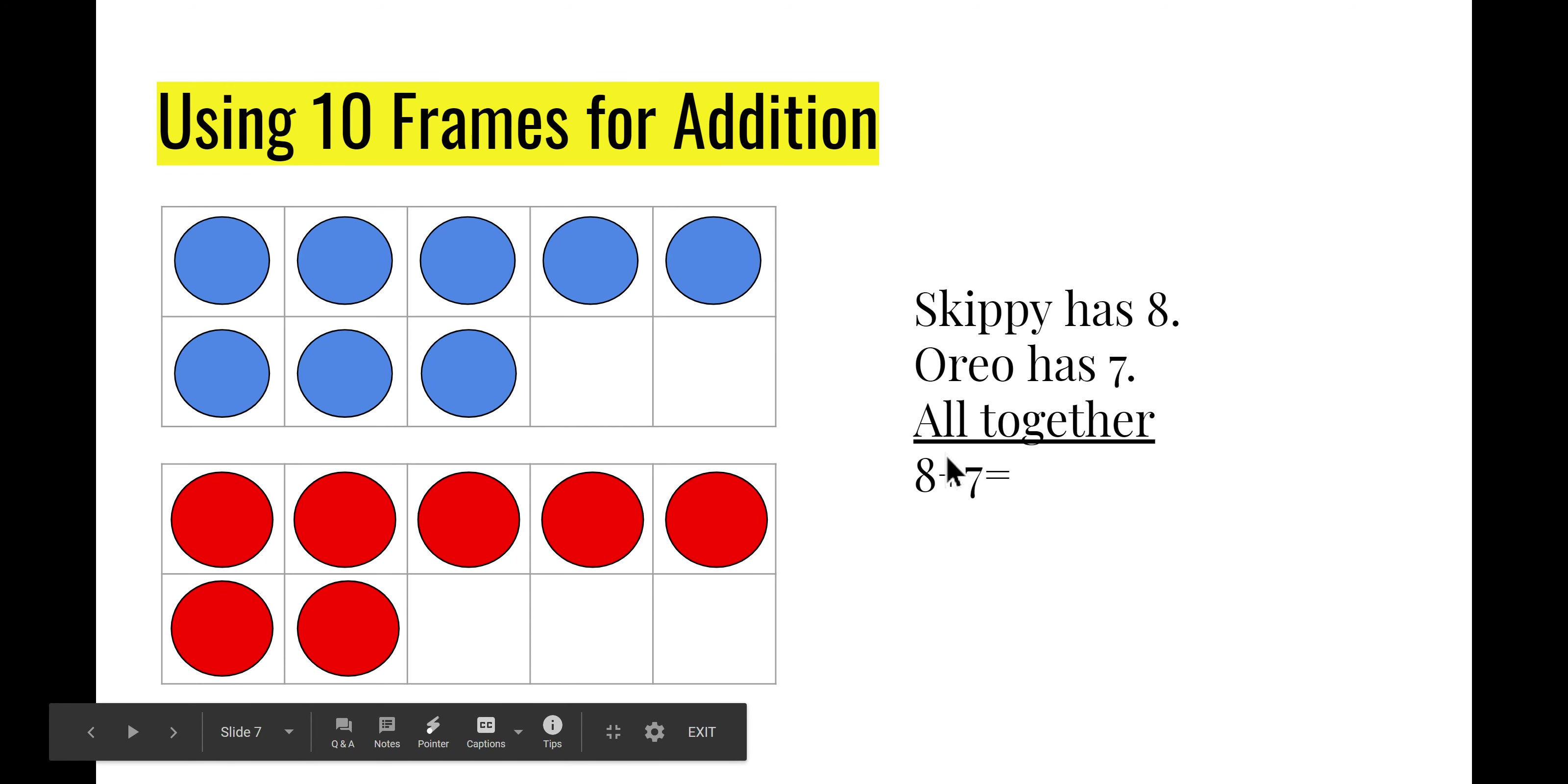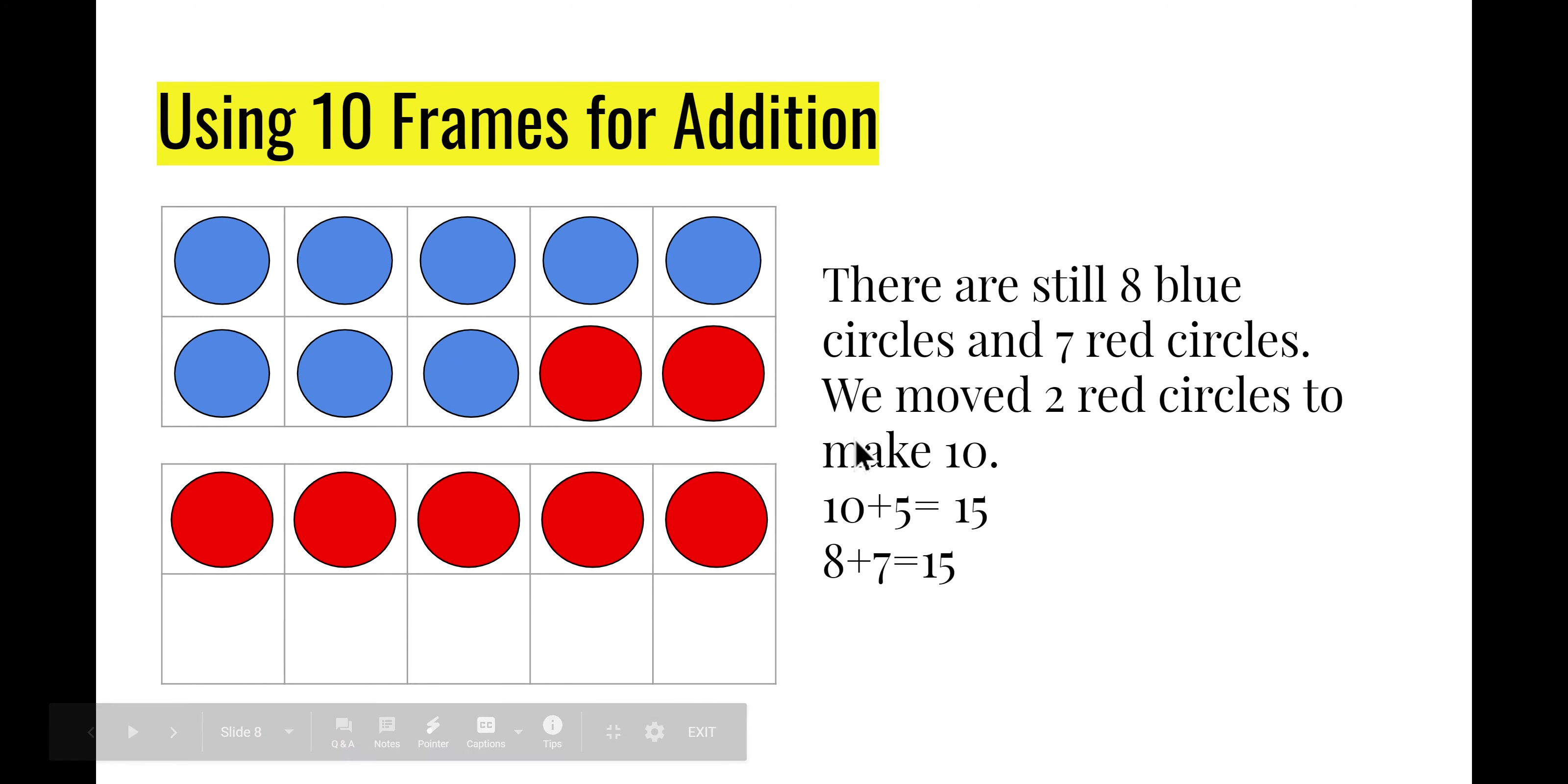How many all together? I moved two red circles to fill in this ten frame. So it's easier to count. If I know this is ten, I can count on. Ten, eleven, twelve, thirteen, fourteen, fifteen. They ate fifteen tomatoes.